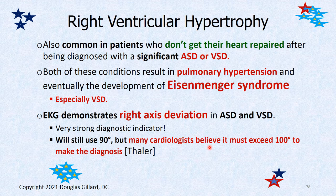Right axis deviation demonstrated by EKG indicates right ventricular hypertrophy — consistent with conditions like COPD, pulmonary hypertension, and Eisenmenger's syndrome.